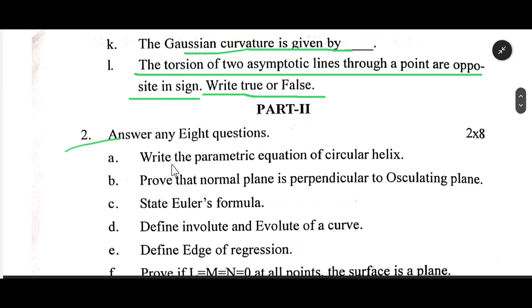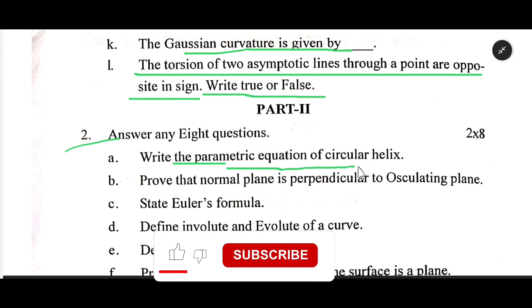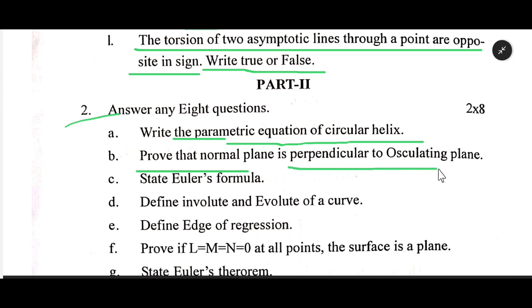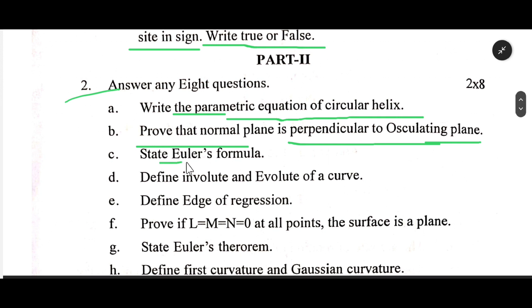Number two: Write the parametric equation of circular helix. Prove that normal plane is perpendicular to the oscillating plane. State Meusnier's theorem. State Euler's theorem.